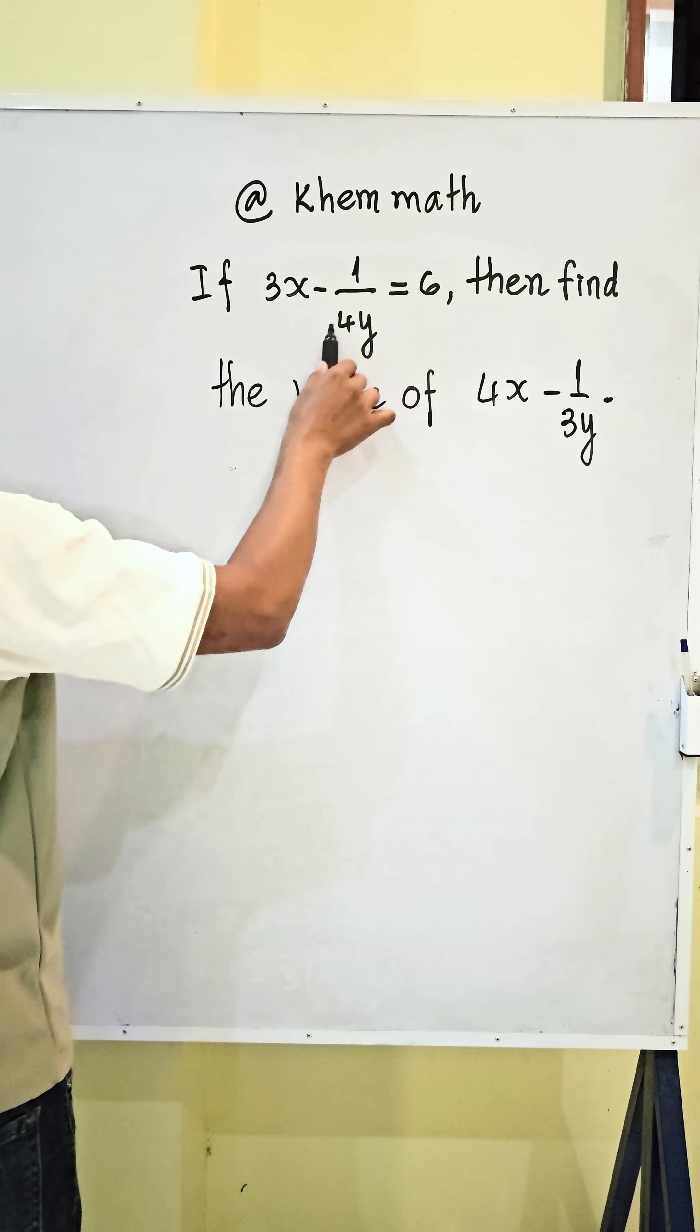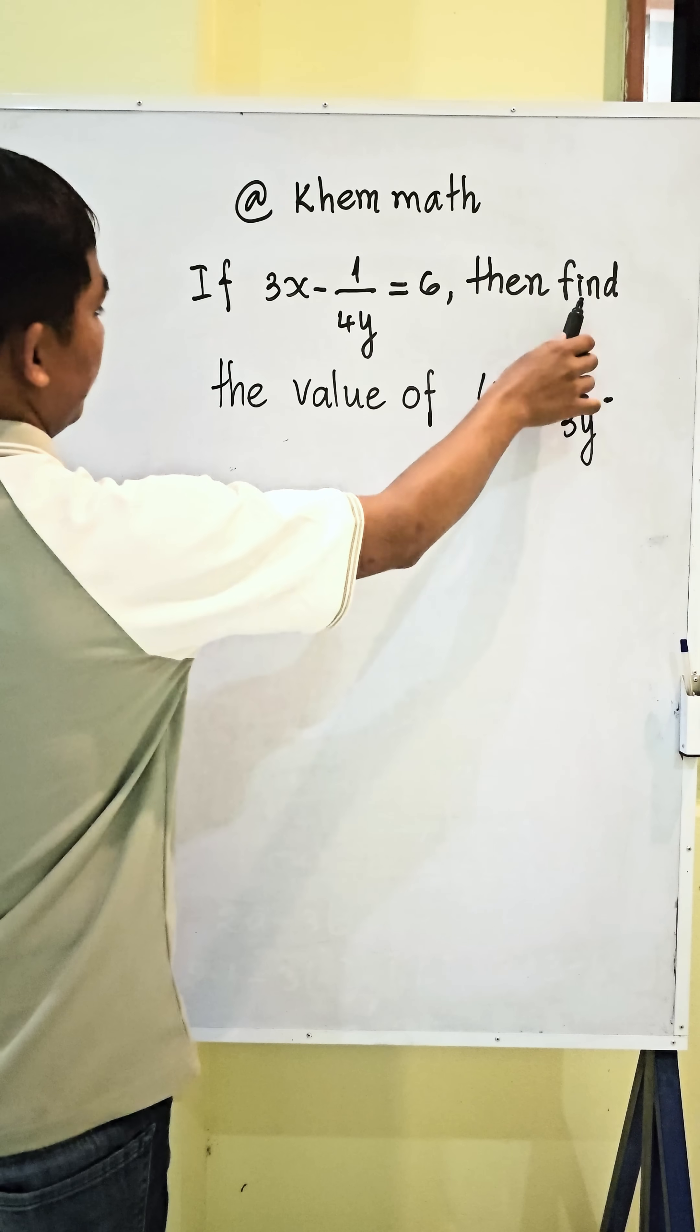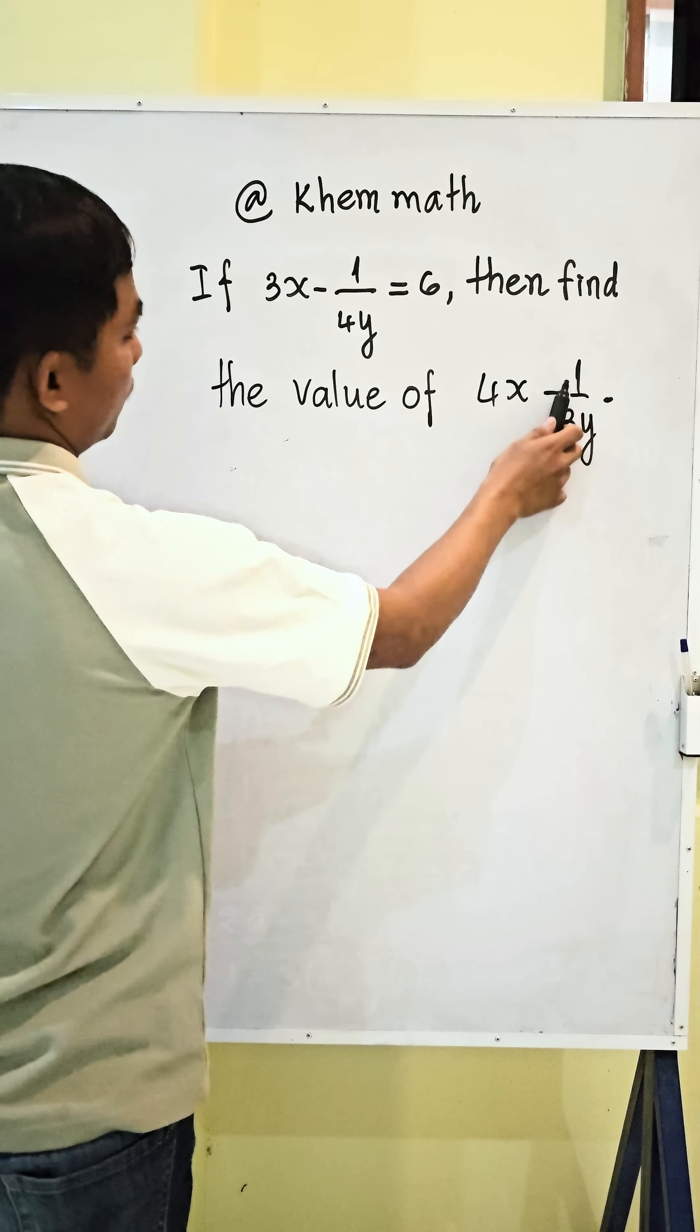If 3x minus 1 divided by 4y equals 6, then find the value of 4x minus 1 divided by 3y.